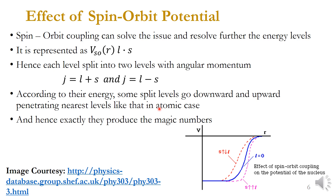We find that after this spin-orbit splitting, the levels exactly produce the magic numbers. The intermediate potential levels split — one going to one side, one to the other — and this spin-orbit interaction causes the energy levels to be further resolved. We will now examine the results in detail.